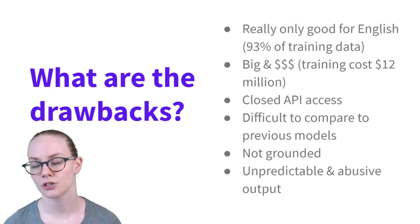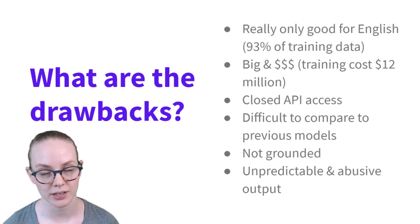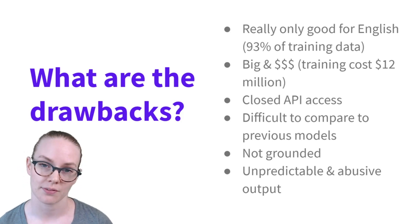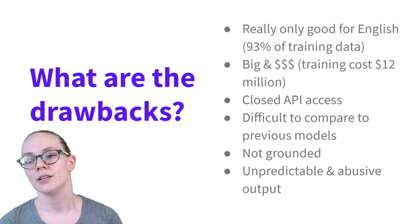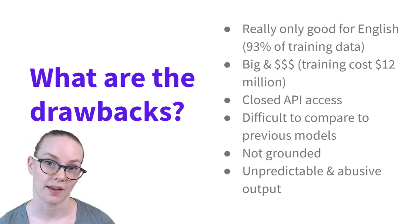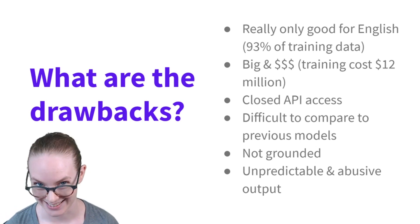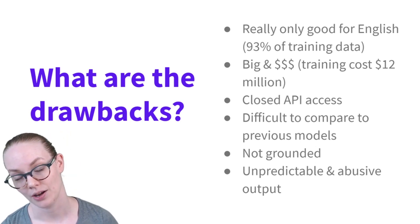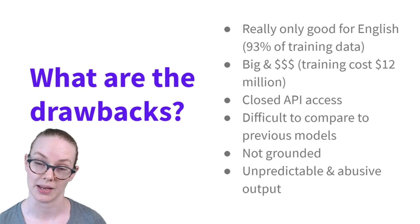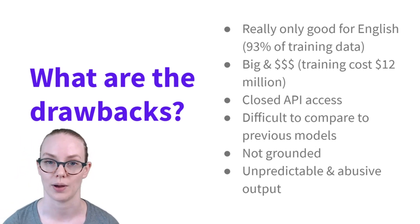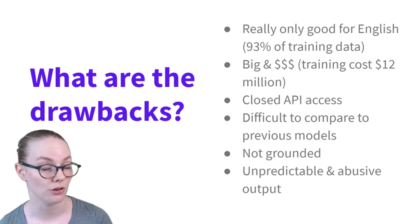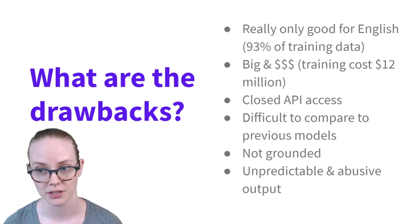There are pretty big drawbacks. A big one is that this is predominantly an English language model — 93% of the training data was in English. It's also very, very expensive: 175 billion trainable parameters, and the compute cost from OpenAI is around $12 million. Access to the model is through an API that is currently closed — you have to be invited to use it. And because it is so large, the likelihood that you'll be able to train a version for yourself is very low.